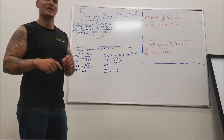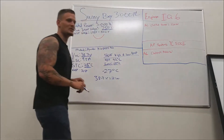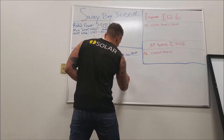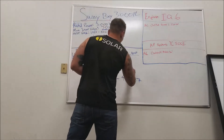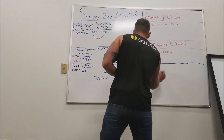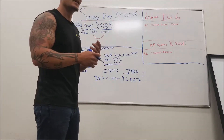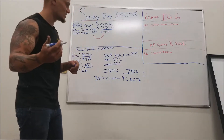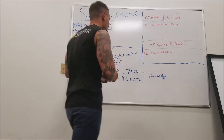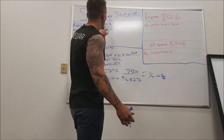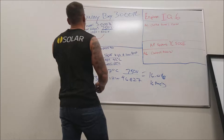At negative 27, the correction factor is 1.21. So 38.7 times 1.21 equals 46.827 volts. We take 750 volts and divide by 46.827. 750 divided by 46.827 equals 16.016. We can't round up because that puts us over 750 volts, so that's 16 panels per string for this inverter.